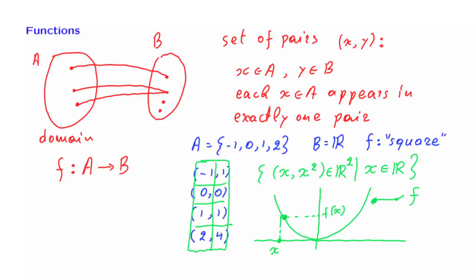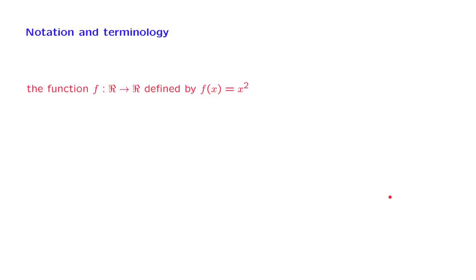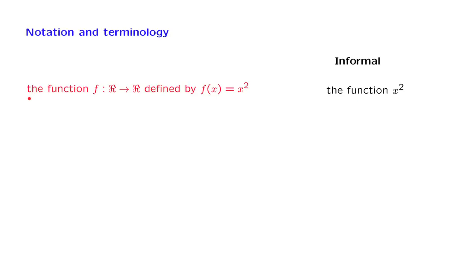Let us talk about the notation and the proper way of talking about functions. The most common and appropriate way is to describe the domain, describe the set on which the function takes values, and state for any x in that set what the value of the function is. On the other hand, sometimes people use looser language, such as saying 'the function x squared.' What that means is exactly the same formal statement.